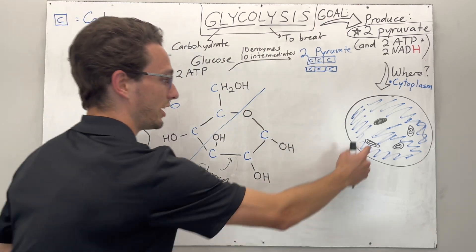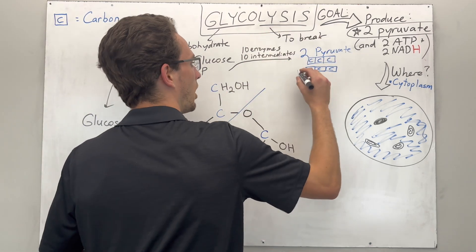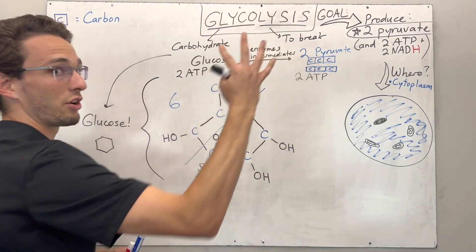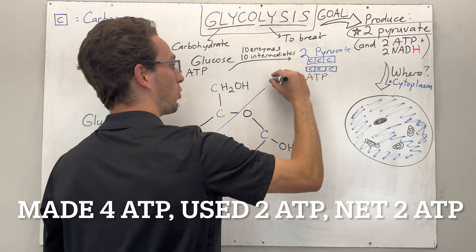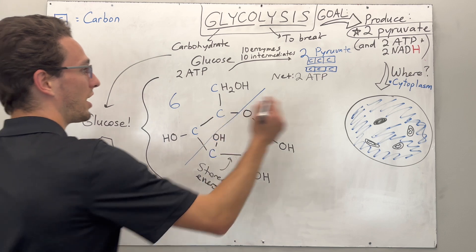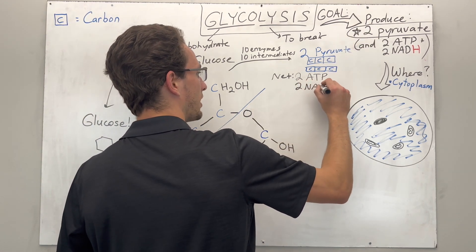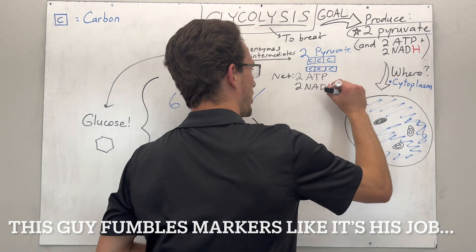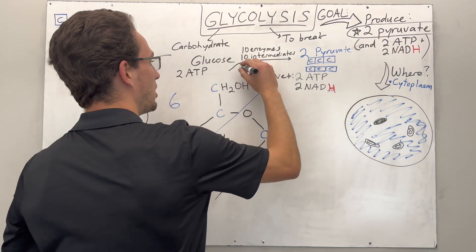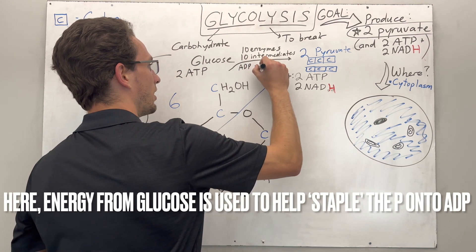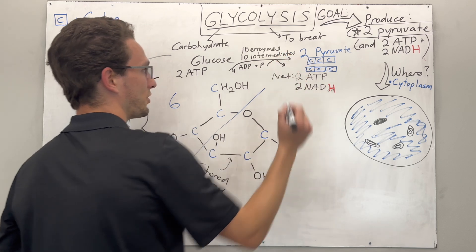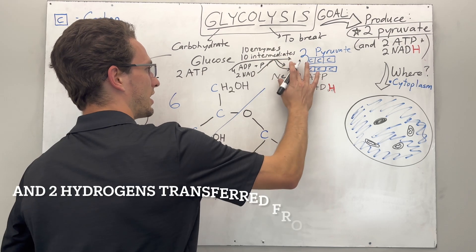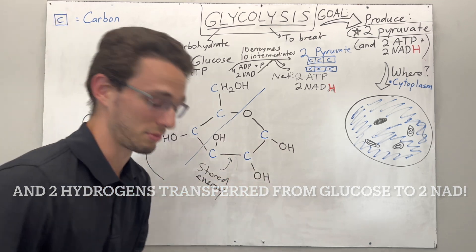Those two pyruvates will go into the citric acid cycle in the mitochondrial matrix. We also produce a net of two ATP. Technically in this process we generated four ATP, but we net two ATP. And also in the process we're going to produce two NADH — that H has some energy we're going to use later on. So ADP and phosphates come together, specifically four of them, and we net those two ATP. We'll also have two NAD go into this process and net those two NADHs, snagging those H's from the glucose molecules themselves.